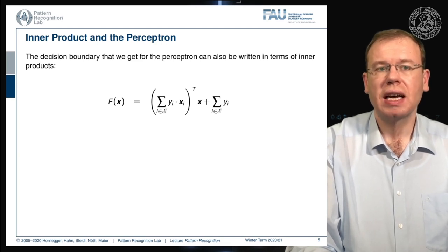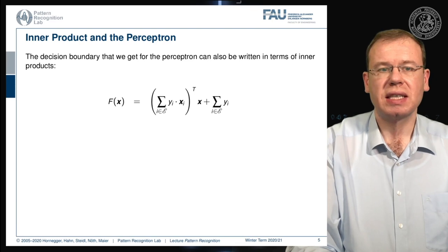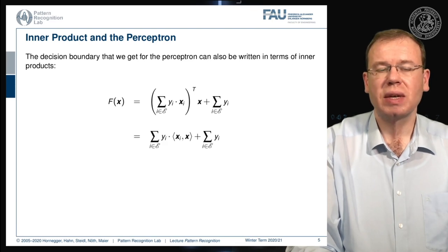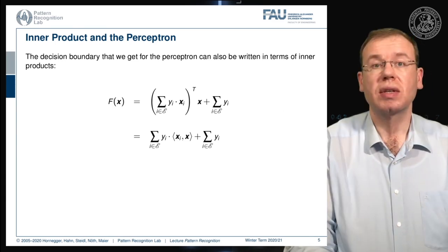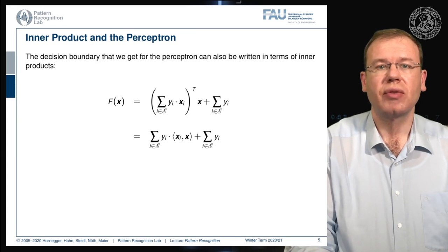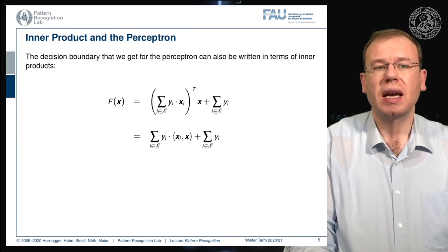We already have seen that also in this case we essentially only had inner products for the decision boundary and we only need the observations that actually produced updates of our decision boundary during the training process. So this is the set E here if you remember. Again everything can be boiled down to inner products.